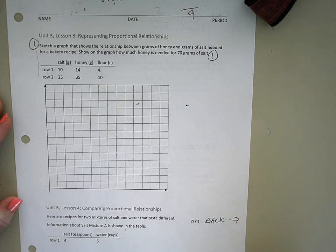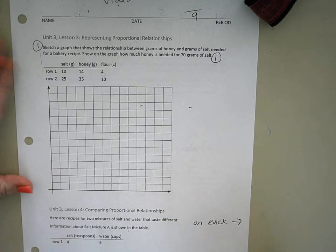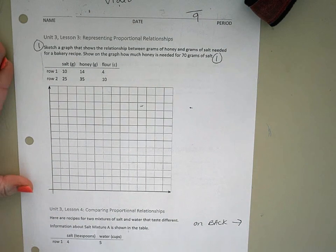We've been working this week talking about proportional relationships, constant proportionality, and leading into slope. Your homework was really a review of some of the lessons from last week.